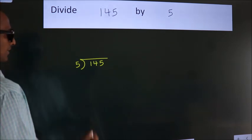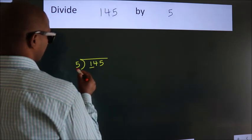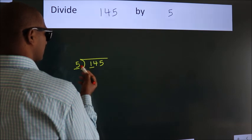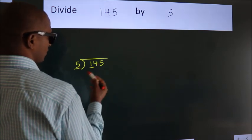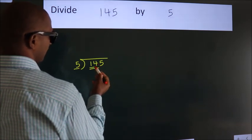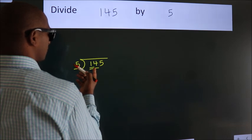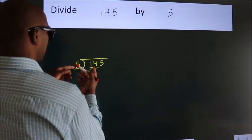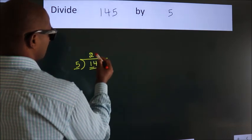Next. Here we have 1, here 5. 1 is smaller than 5. So we should take two numbers, 14. A number close to 14 in the 5 table is 5 twos, 10.